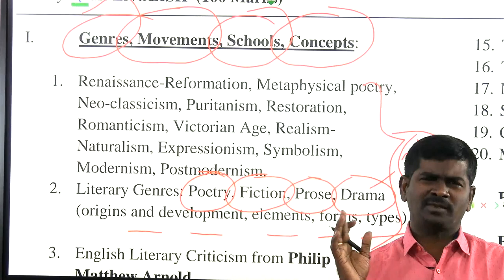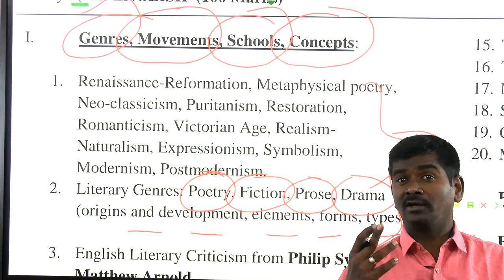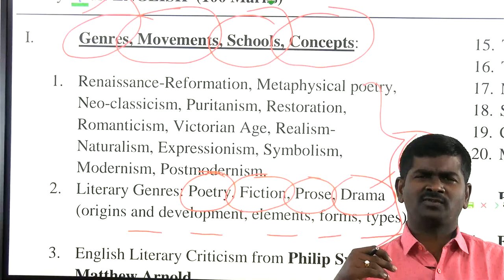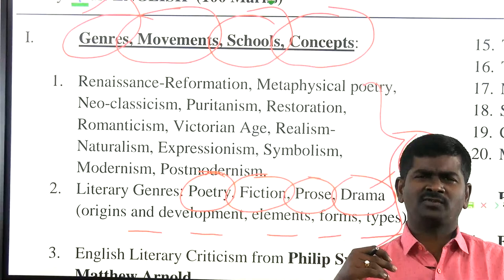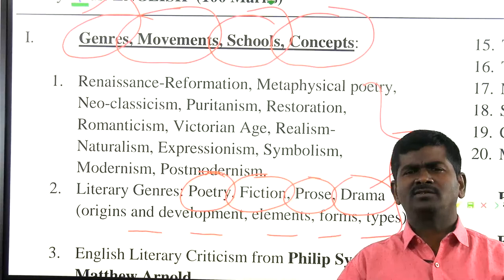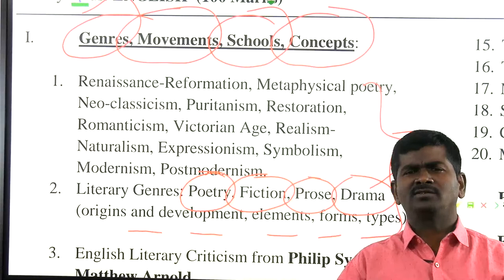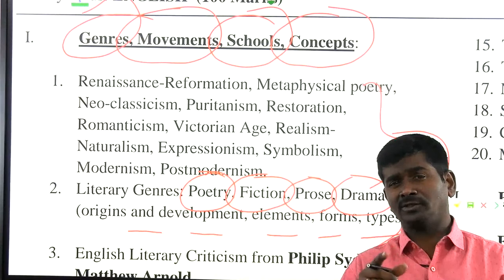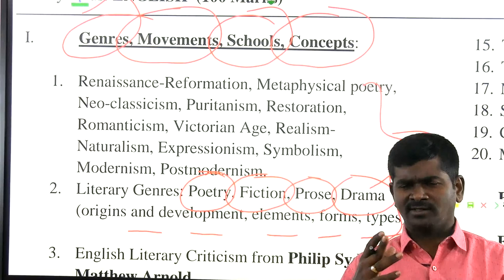You need to know what is Senecan tragedy, what is classical tragedy — a tragedy that follows three unities with chorus. Who are the popular classical tragedians — Aeschylus, Sophocles, Euripides? And what is closet drama — a drama not intended to be performed on stage, only to be read? The first closet drama is Samson Agonistes. The 20th-century closet drama is Murder in the Cathedral. There are a lot of technical terms — what is morality play, miracle play, mystery play, interludes?